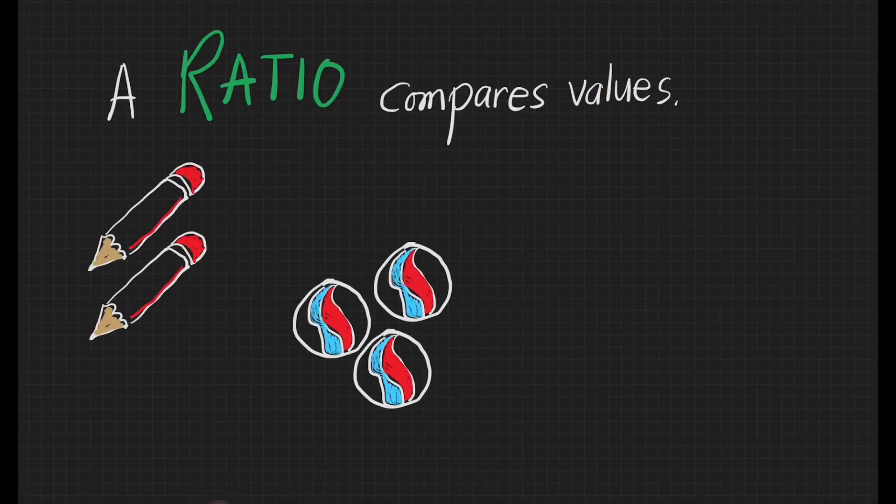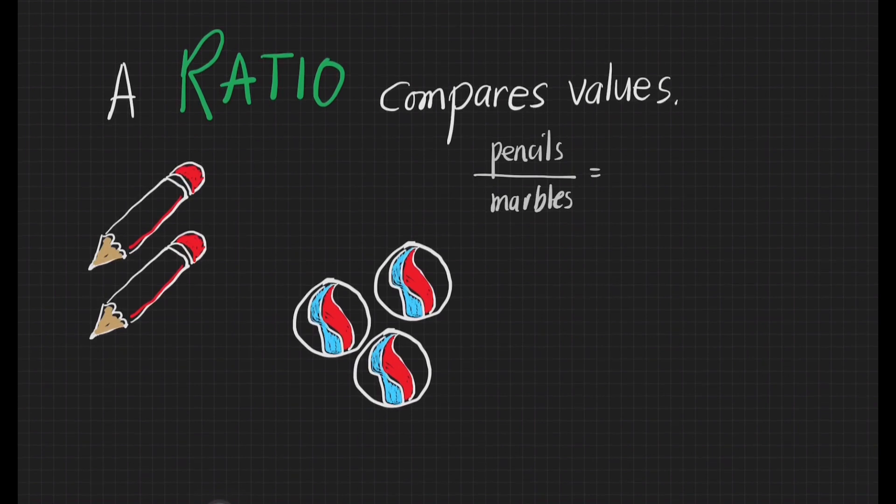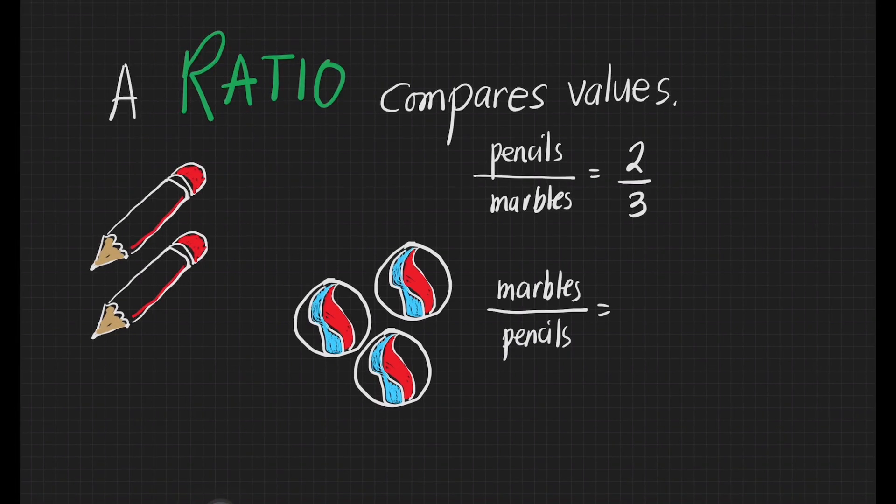Here is an example. We have here two pencils and three marbles. The ratio of the number of pencils to the number of marbles is 2 is to 3. The ratio of the number of marbles to the number of pencils is 3 is to 2.